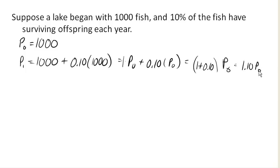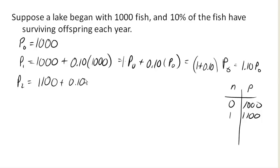10% of 1,000 is 100. Add that on, would be 1,100. Now after two years, I'm going to get my previous population of 1,100 plus 10% of, not 10% of 1,000, but now 10% of that 1,100.